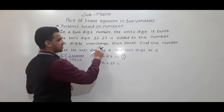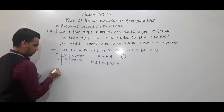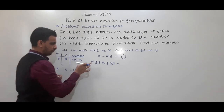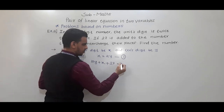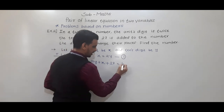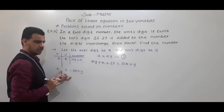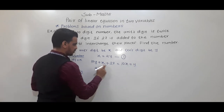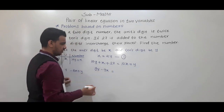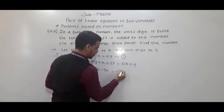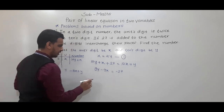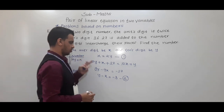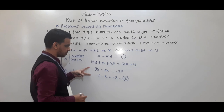In that new number, the digits interchange their places, meaning x is now in the tens place and y is in the units place. So the new number is 10x plus y. The equation becomes: 10y plus x plus 27 equals 10x plus y. Rearranging, if we divide by 9, we get y minus x equals minus 3. This is equation 2.